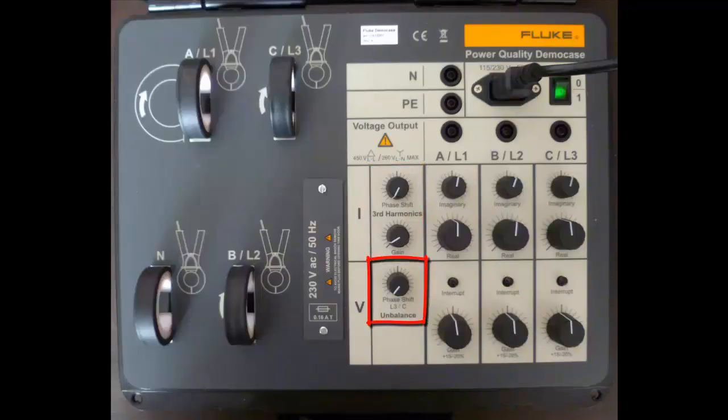And on the last of the controls we have the unbalance. Here we can create unbalance between each of the phases. We can also do that by adjusting each of the magnitudes of each voltage on each phase, so A, B and C, so that we can create a situation where it appears we have unbalance.